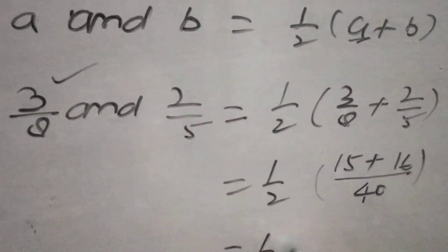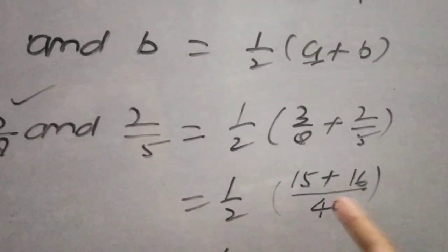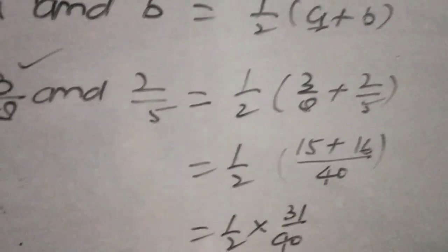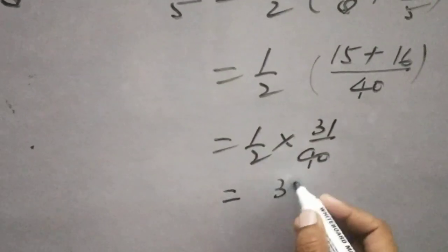It means 1 upon 2 into, 15 plus 16 equals 31 upon 40, which gives us 31 upon 80. So 31 upon 80 is the rational number between 3 upon 8 and 2 upon 5.